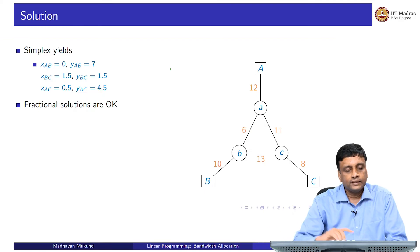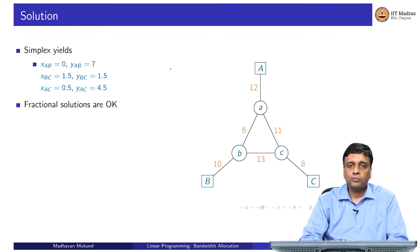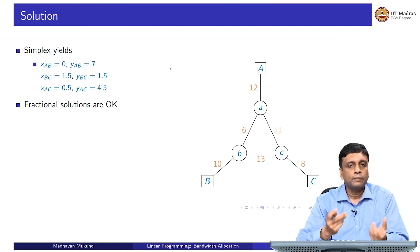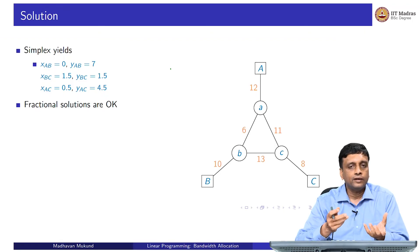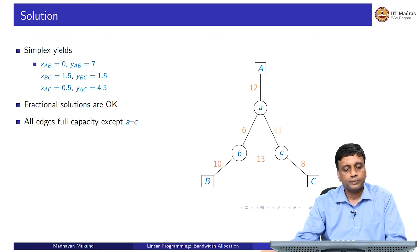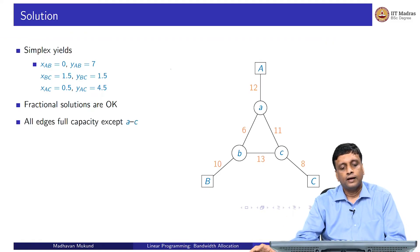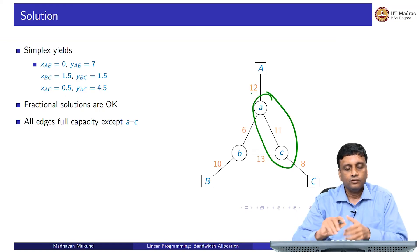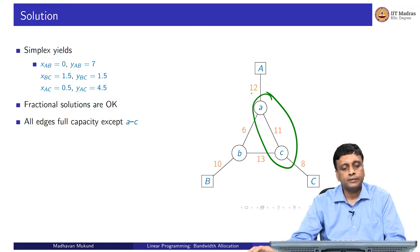One thing observed in an earlier problem was that we had fractional solutions. Here it is not like hiring one person or making one carpet which is indivisible — we can give half a megabit of bandwidth, so fractional solutions are okay. If you examine the solution, it will turn out that almost every edge is saturated except one.